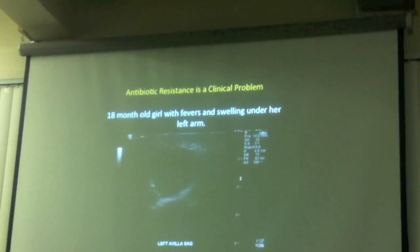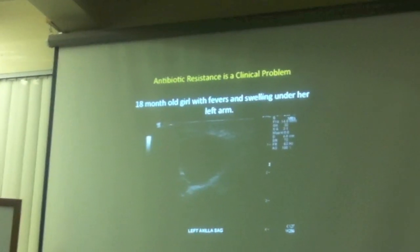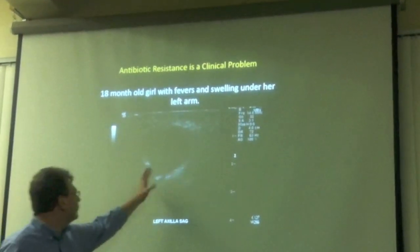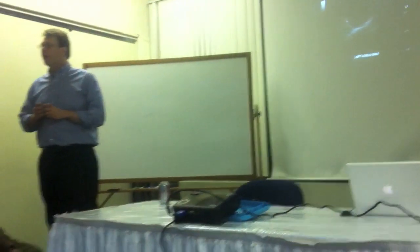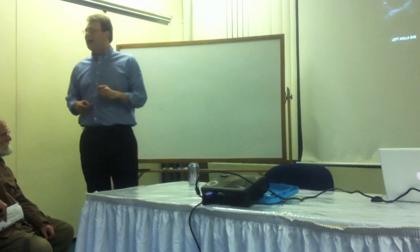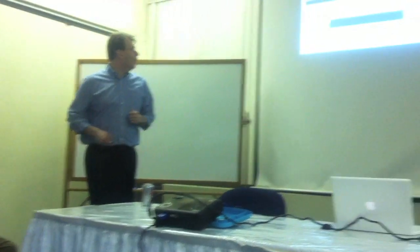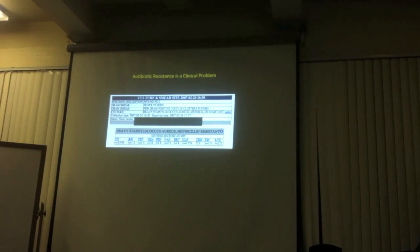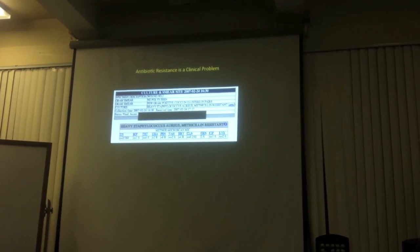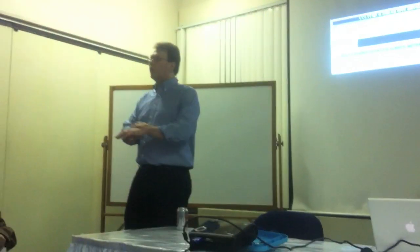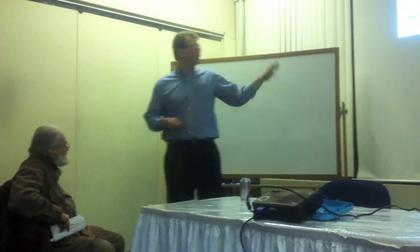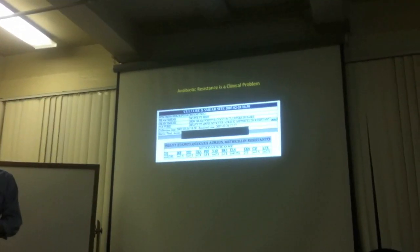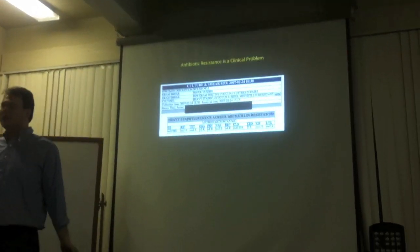One more patient: an 18-month-old who had been previously healthy, with an ultrasound showing a large lymph node under her armpit. When we incised it, she grew an organism you've probably heard of on the news — MRSA, methicillin-resistant Staph aureus. Staph aureus lives on essentially everybody's skin, and this antibiotic-resistant version is causing major problems across the United States and across the world.